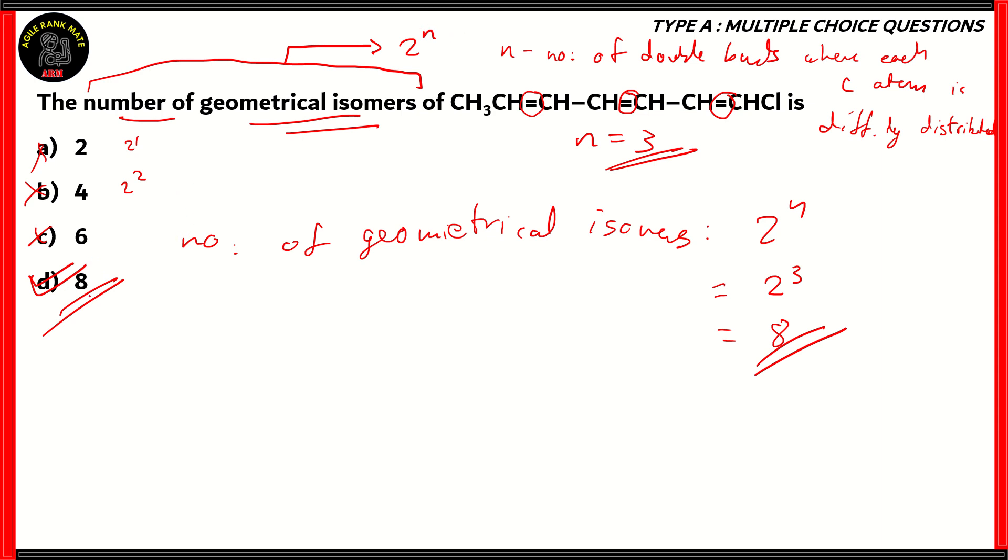So the only correct option in this particular scenario is option D, 8. And the reason why is that the value of N is 3, so therefore 2 raised to 3 turns out to be 8. So the number of geometrical isomers of the particular compound in the question is 8.